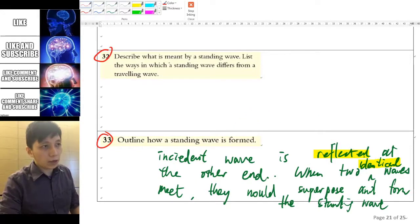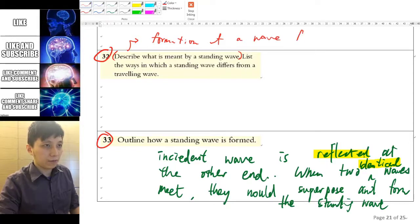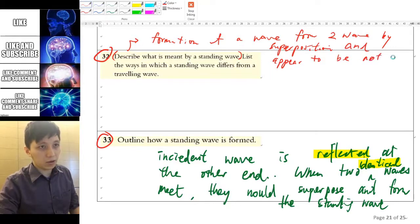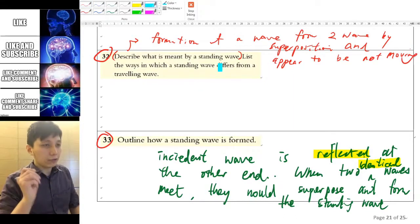Okay, so for the other question we can talk about what is meant by standing wave first. And like we said, it's a formation of a wave from two waves by superposition, like what we just mentioned.